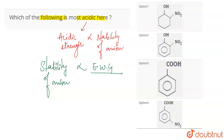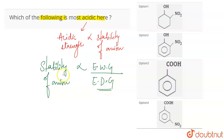When an electron withdrawing group is attached to the anion, it is going to increase the stability because it is going to withdraw the electron density and stabilize the ion. And it is inversely related to the electron donating group — whenever an electron donating group is present, it is going to destabilize the anion. So the stability of the anion is directly related to the electron withdrawing group and inversely related to the electron donating group.